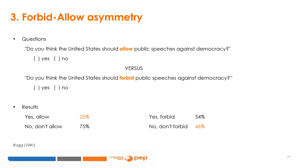It is also worth noting that there is a forbid-allow asymmetry. A survey randomly asked whether the government should allow or forbid public speeches against democracy. The results showed that 25% said 'allow it,' but 46% said 'forbid it' when the original question mentioned the word 'forbid.'